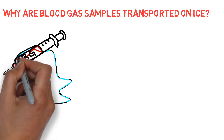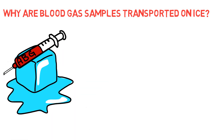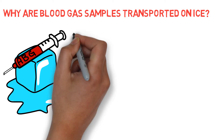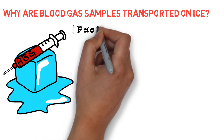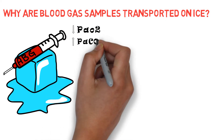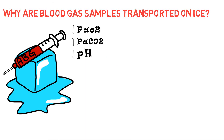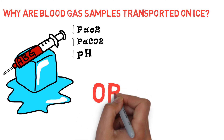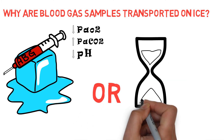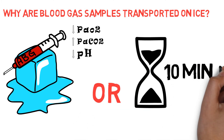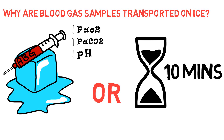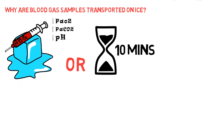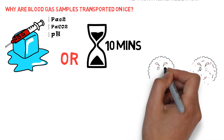Why are blood gas samples transported on ice? Metabolism by blood cells continues in the syringe until the sample is analyzed, causing a decrease in PO2, an increase in PCO2, and a decrease in pH. This can be diminished by transport of the sample in an ice water slush unless the sample is analyzed within 10 minutes. The metabolic effects on the blood sample are caused primarily by the activity of leukocytes.